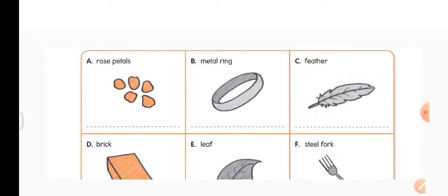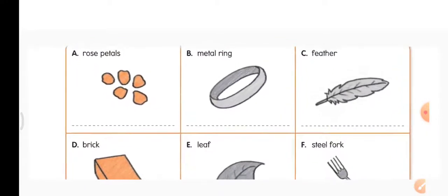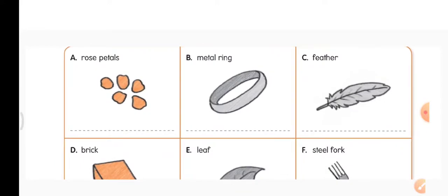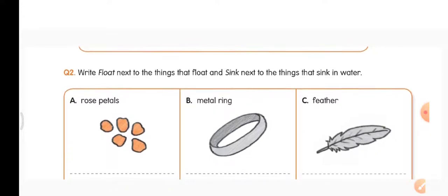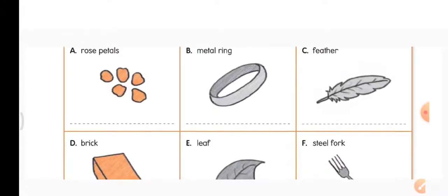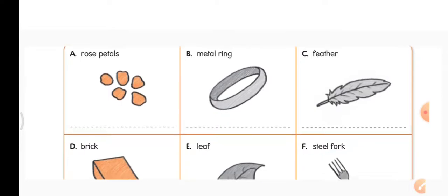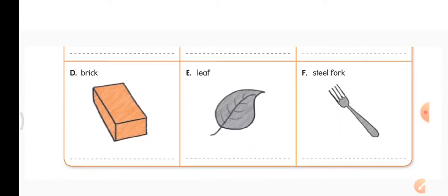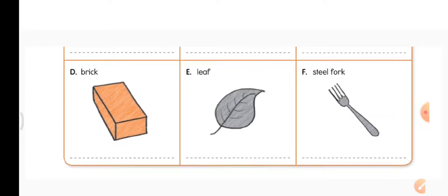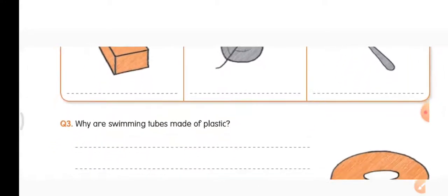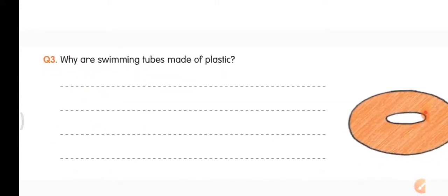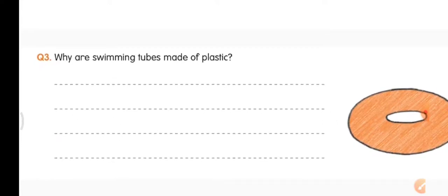Rose petals — float. Metal ring — sink. Feather — float. Brick — sink. Leaf — float. Steel fork — sink. Write the spellings neatly: F-L-O-A-T for float and S-I-N-K for sink.